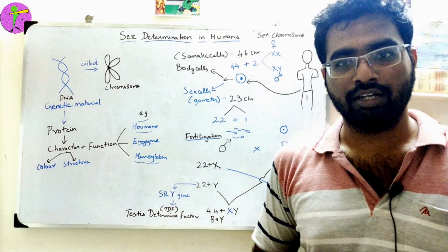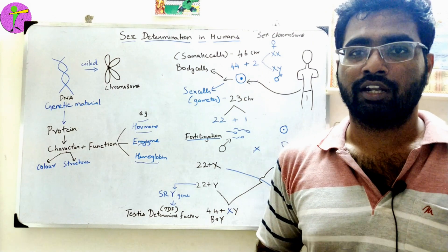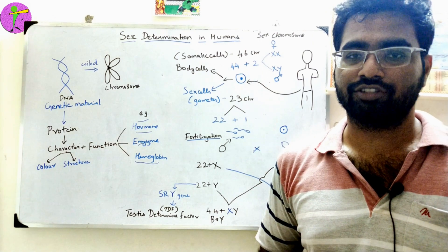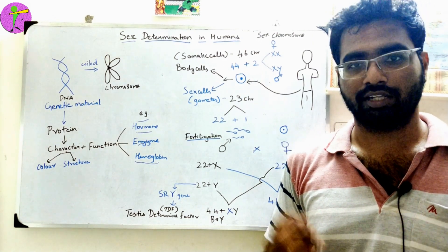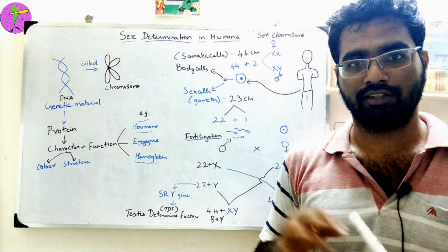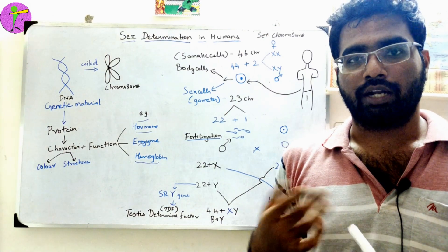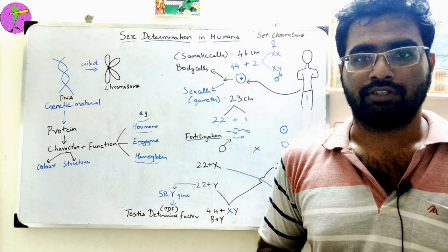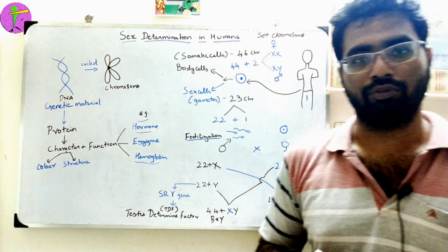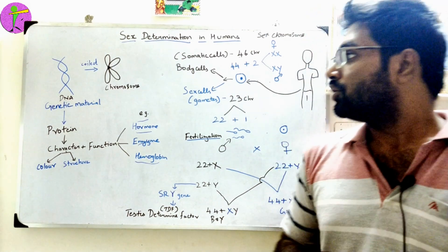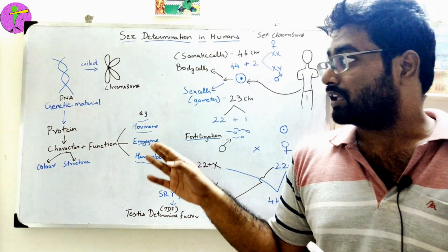Hemoglobin is a component in your blood — it is red in color and acts as an oxygen-carrying material. Proteins are the most important part. Keratin is a structural protein, and collagen is also a protein — these are the most important products of DNA.